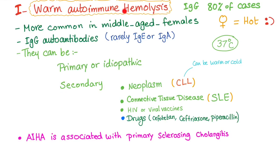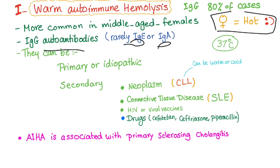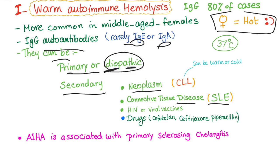Warm autoimmune hemolysis — IgG — represents 80% of cases of autoimmune hemolytic anemia, more common in middle-aged females. The autoantibodies are IgG, rarely IgE or IgA. They can be primary or idiopathic. Secondary causes include neoplasm, connective tissue disease such as lupus, HIV, viral vaccines, or drugs such as cefotetan, ceftriaxone, and piperacillin.